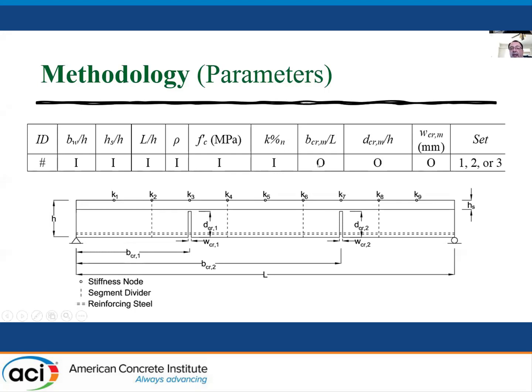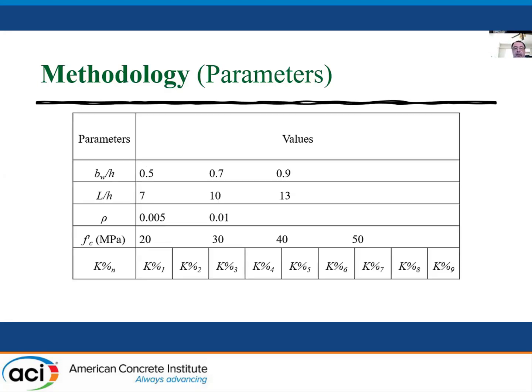The outputs, on the other hand, are the location of the crack relative to the length of the beam, and the depth of the crack relative to the height of the beam, as well as the width of the crack. And these sets one, two, and three are for training, testing, and validation.